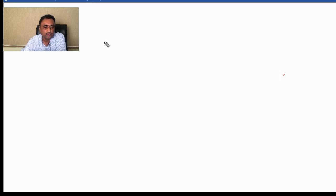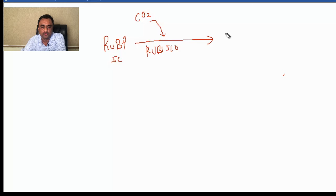The first step is that RUBP, a 5-carbon compound, takes atmospheric CO2 and in the presence of enzyme rubisco forms a 6-carbon unstable compound. Soon it breaks into 2 molecules of 3-PGA, a 3-carbon compound.